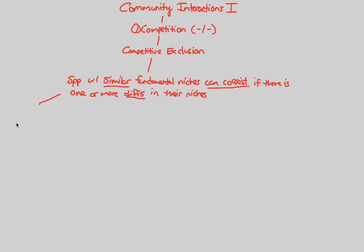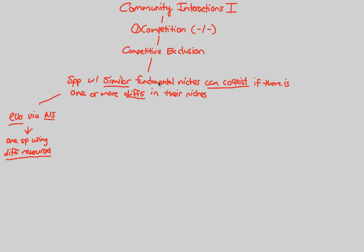This is mainly due to evolution via natural selection, which we've studied in great detail. Through this principle, one species in this interaction may be using some different resources. If it's using different resources, then evolution and natural selection will act on it differently, because the environment is being used differently due to the small but important difference between the two similar fundamental niches.